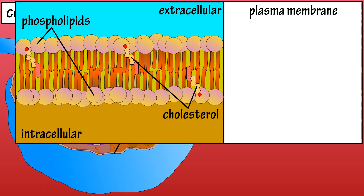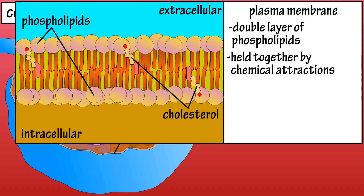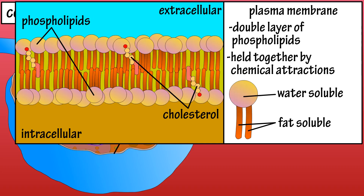The plasma membrane is the outer boundary of a cell. It is composed mainly of a double layer of phospholipid molecules held together by chemical attractions. These phospholipid molecules have a water-soluble head and lipid, or fat-soluble, tails, so they form a bilayer that acts like a fence, allowing lipid-soluble molecules to pass through easily and preventing water-soluble molecules from passing through easily.